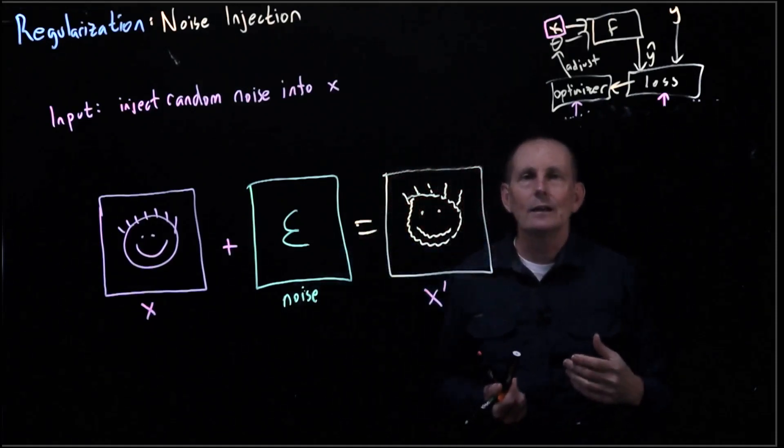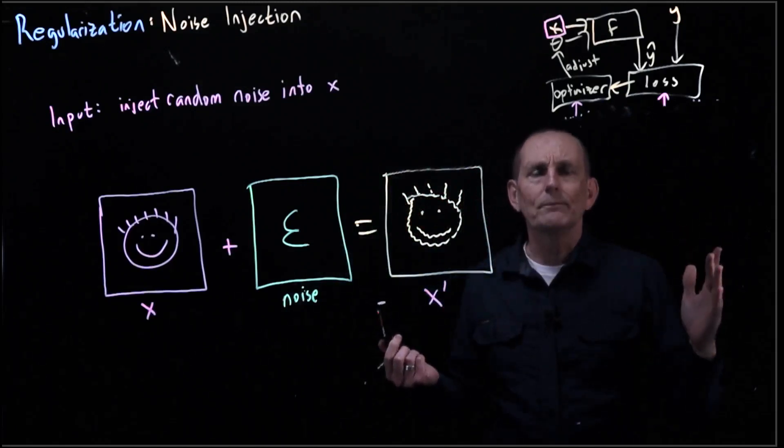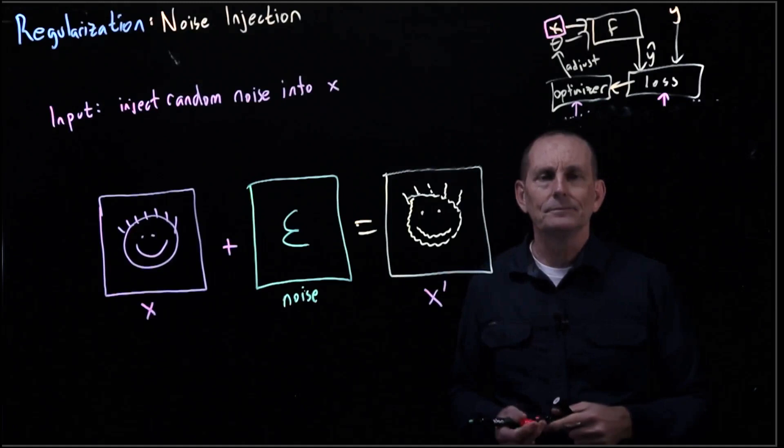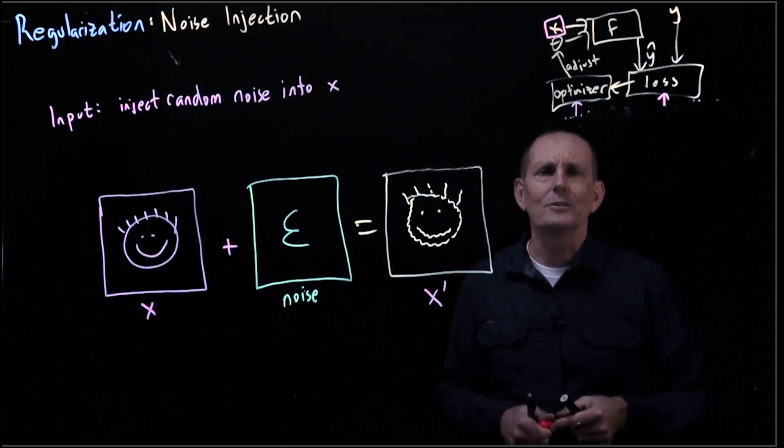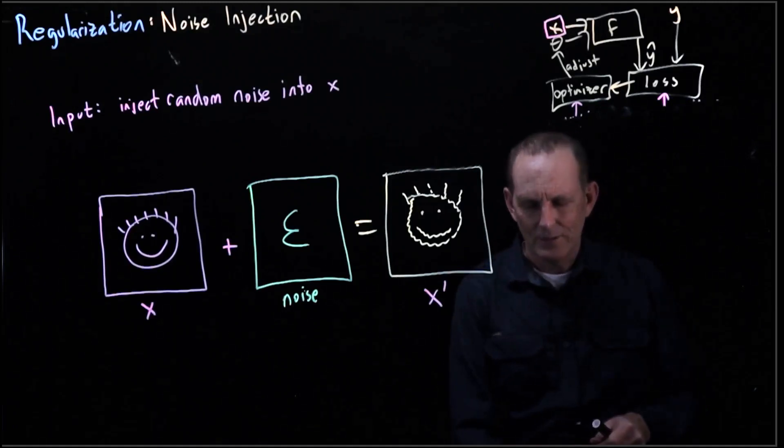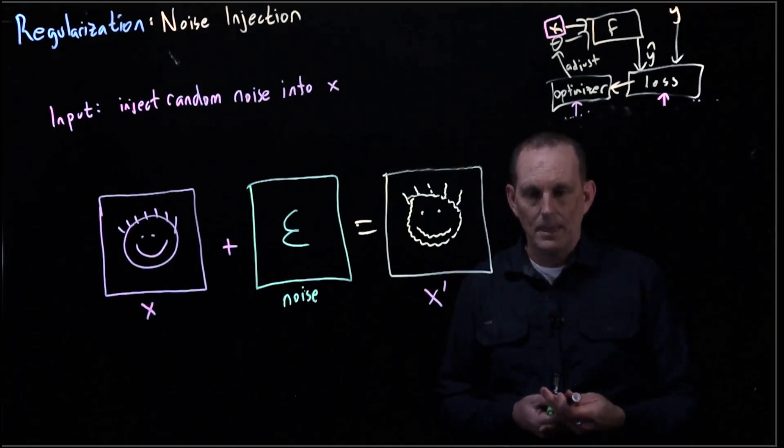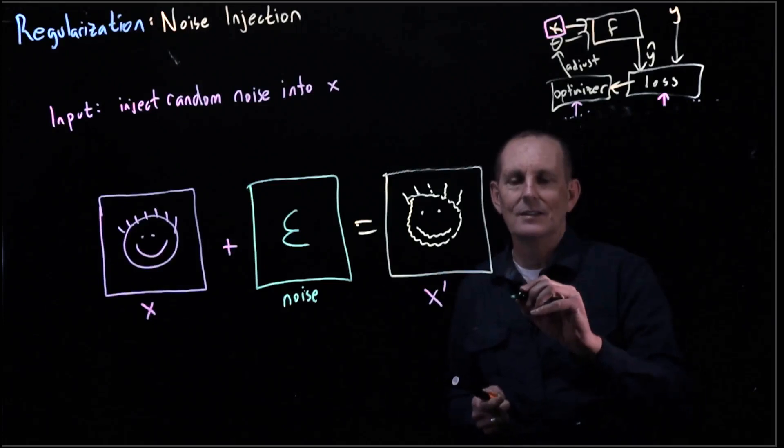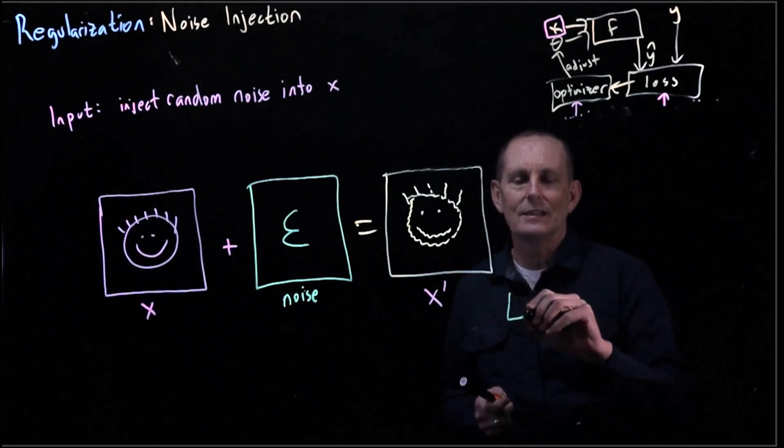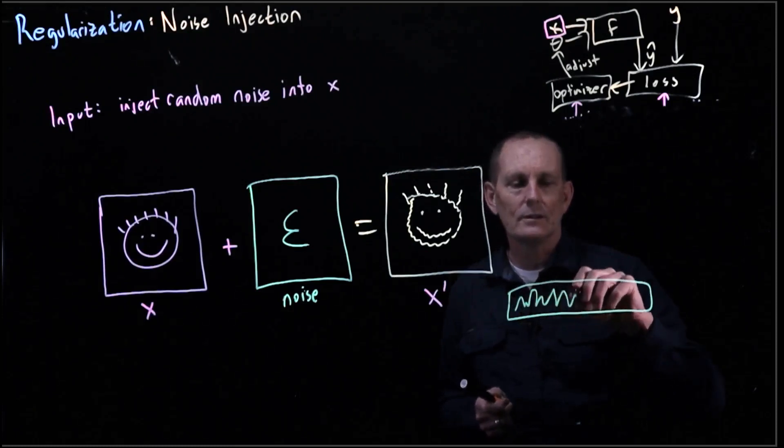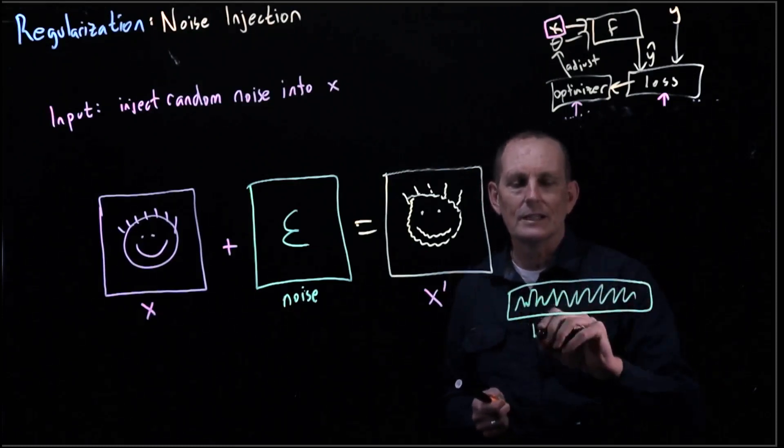In other circumstances, we might have different kind of noise. So let's say we have an audio stream. We're trying to support, hey Alexa, or sorry, I'm a Google guy, I don't use Alexa. So it's hey Google. And so we have an audio stream that says, we have our waveform that says, let's say, hey Google.